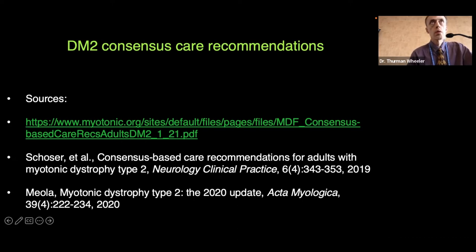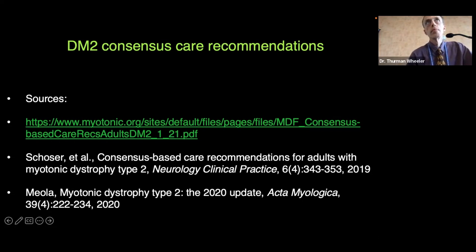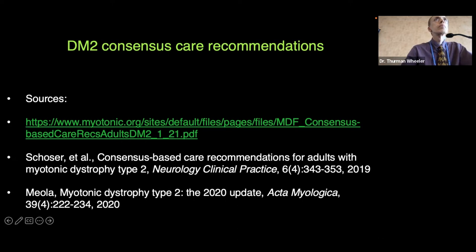There are a couple of other resources at the Myotonic Dystrophy Foundation online: the consensus-based care recommendations, the anesthesia guidelines — which are very important to keep with you — the CRISP Project document, and the Myotonic Dystrophy Toolkit, though the toolkit is not as comprehensive as the consensus-based care recommendations. All are found under myotonic.org under resources. The MDF website is a very invaluable tool for information to take to your doctors.